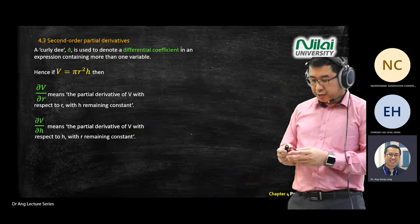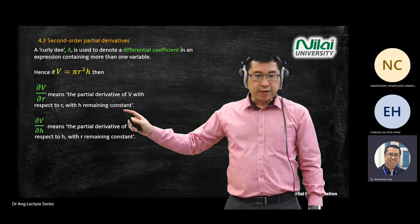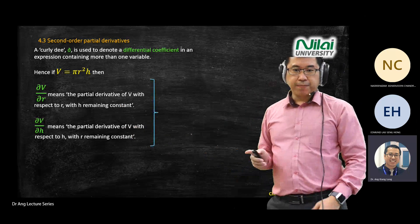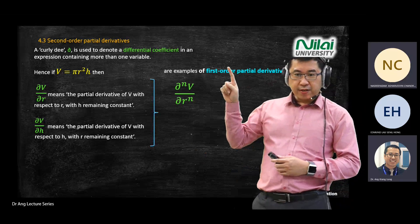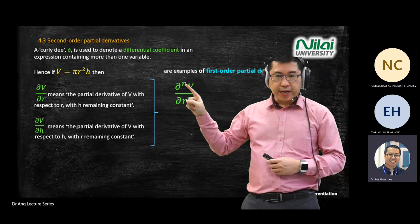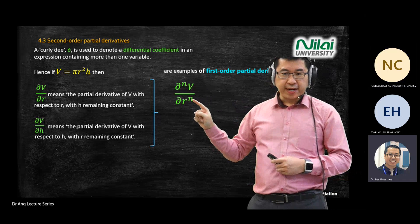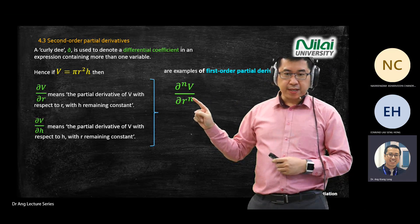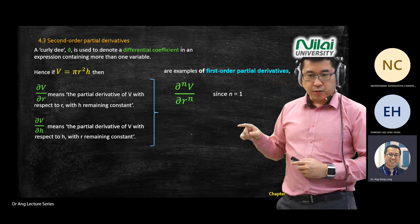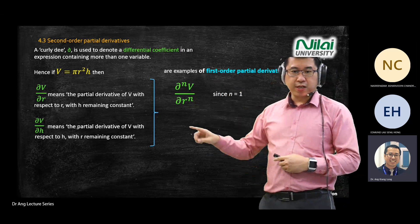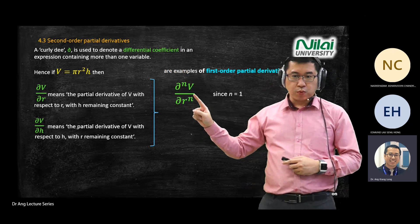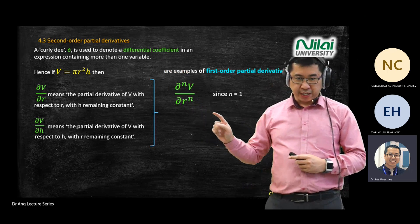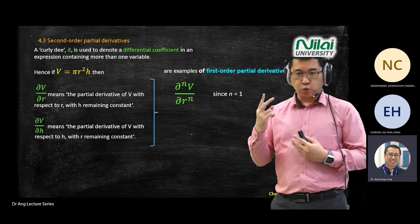Today we're going to look at second-order partial derivatives. Previously, we did first-order where n equals 1. Today we look at second-order, which means n equals 2, meaning you do differentiation two times.